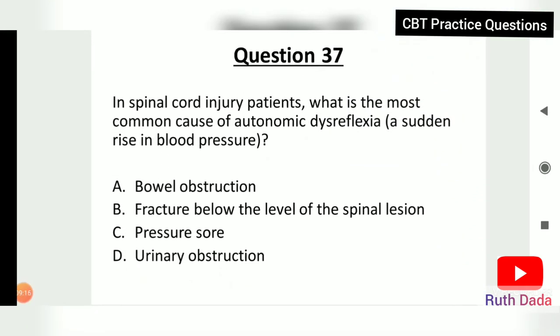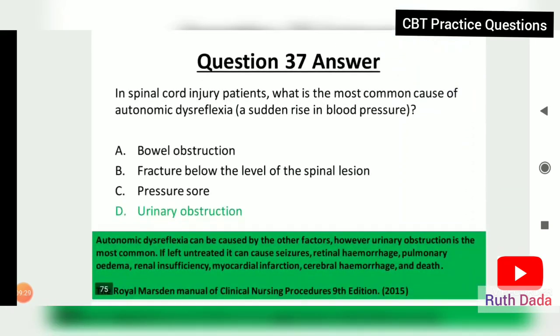Question 37: In a spinal cord injury patient, what is the most common cause of autonomic dysreflexia? The answer is urinary obstruction, which causes a sudden rise in blood pressure. If left untreated, it can cause seizures, retinal hemorrhage, pulmonary edema, renal insufficiency, myocardial infarction, and cerebral hemorrhage.